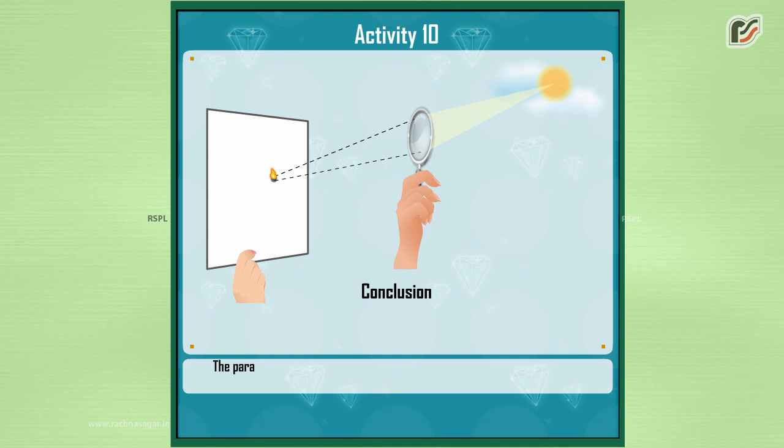Conclusion. The parallel beam of light rays from a far-off object like sun on a convex lens forms a real and point-size image of the sun at the focus of the lens. The distance between the lens and the sheet of paper gives us its focal length.